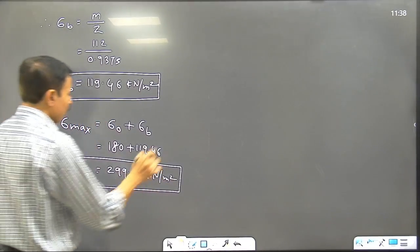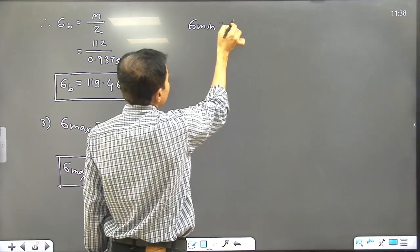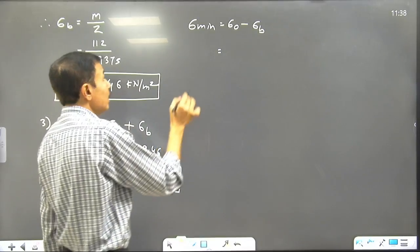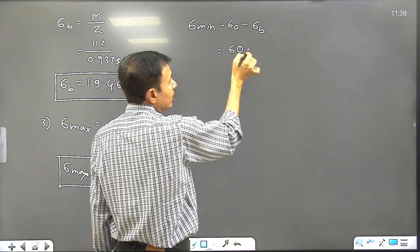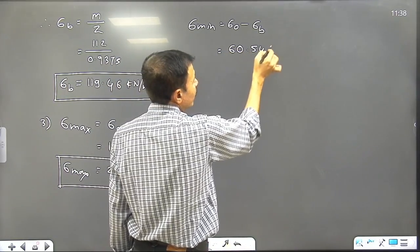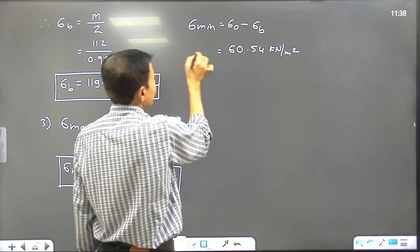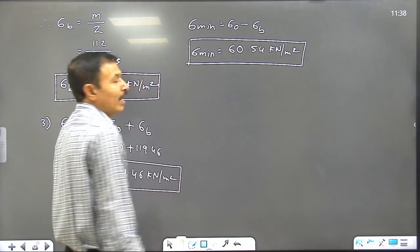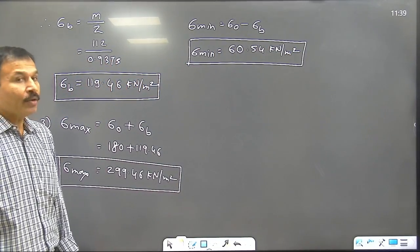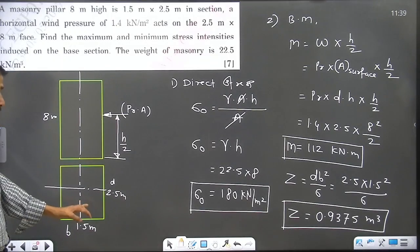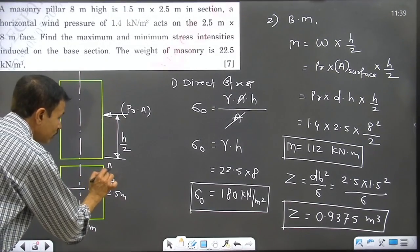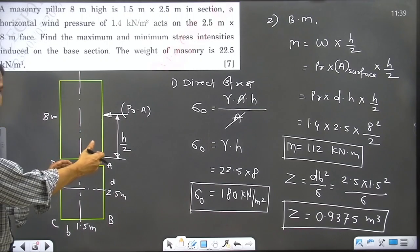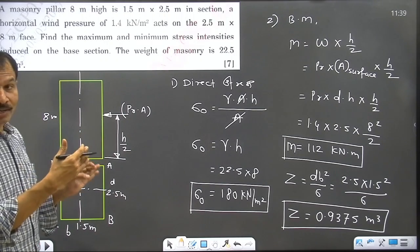Now where does this apply? Similarly, sigma min is equal to sigma 0 minus sigma b, which equals 60.54 kilonewton per meter square. Regarding the location — consider the column with corners labeled A, B, C, D. The maximum stress occurs at one face and minimum at the opposite face.